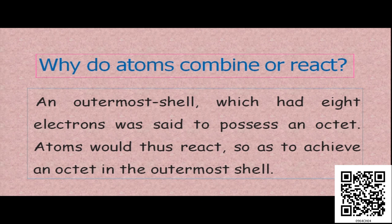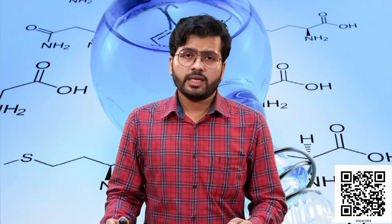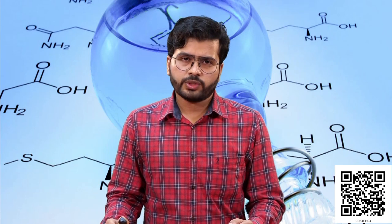That is because by doing so they can have or they can achieve an octet in their outermost shell. And how do they do so? They achieve this octet by sharing or by gaining or losing electrons. We will take some specific examples in order to understand how they achieve this 8-electron configuration in their outermost shell.